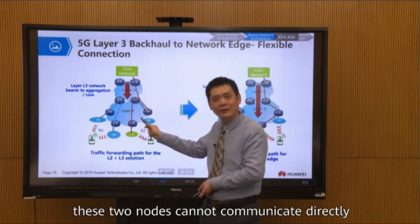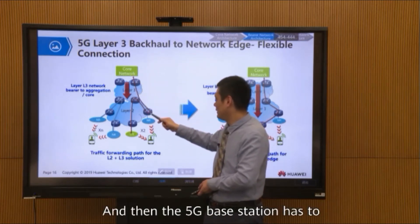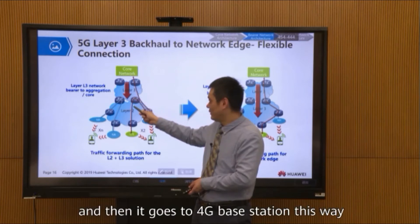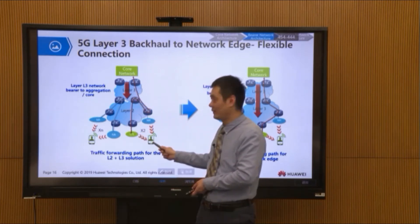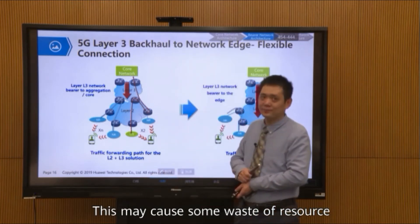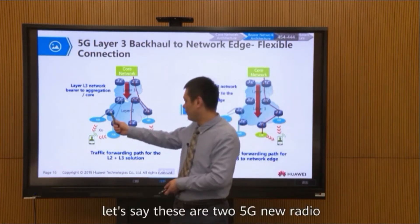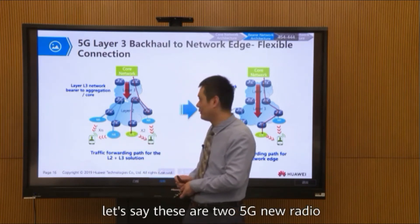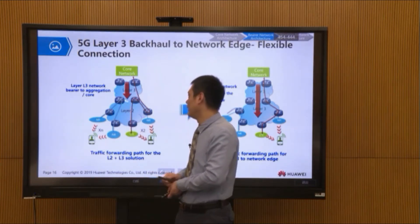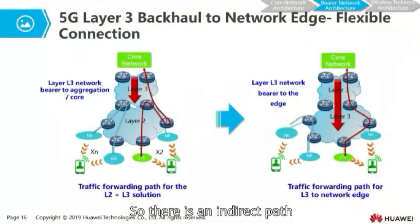In this case, these two nodes cannot communicate directly. So the data comes from the core network to 5G, and then the 5G base station has to send it back to the aggregation layer, and then go to the 4G base station that way. You can see this is an indirect path.